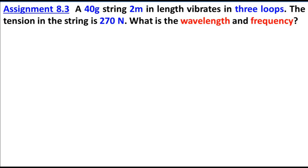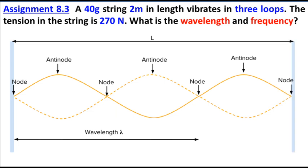Assignment 8.3: A 40-gram string, 2 meters in length, vibrates in 3 loops. The tension in the string is 270 newtons. What is the wavelength and frequency? This is a string with transverse waves, clamped on two sides.